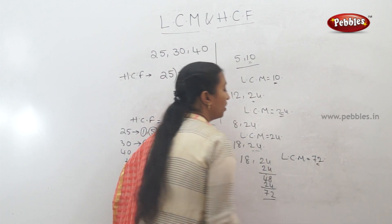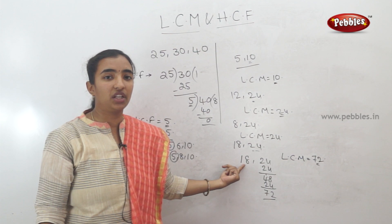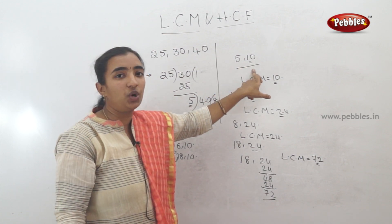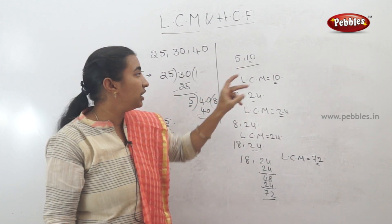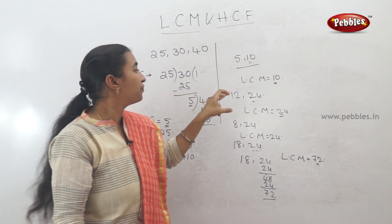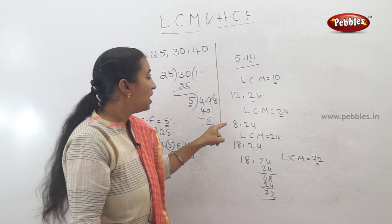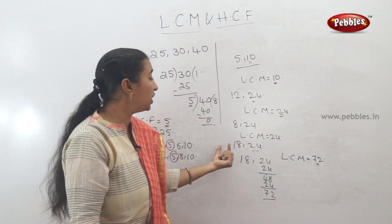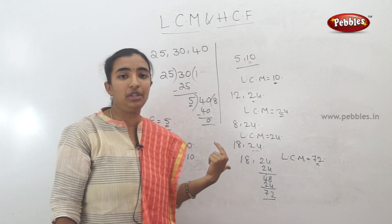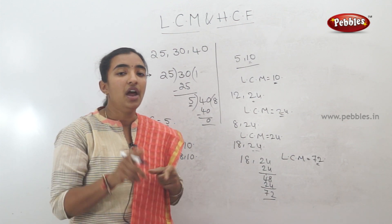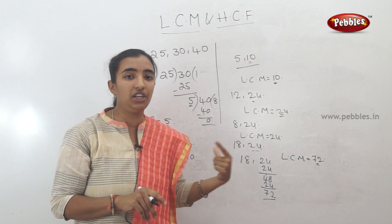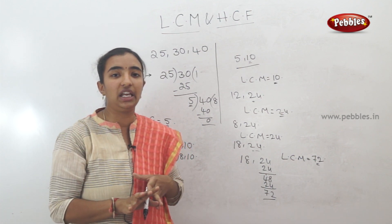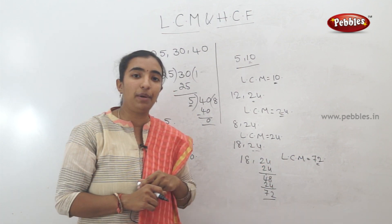The answer is 72. Let's check using the direct divisible method: 18 is not directly divisible into 24, so we check multiples. The LCM of 18 and 24 comes out to be 72.